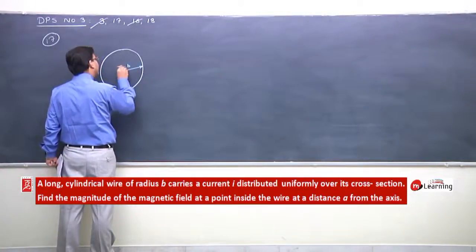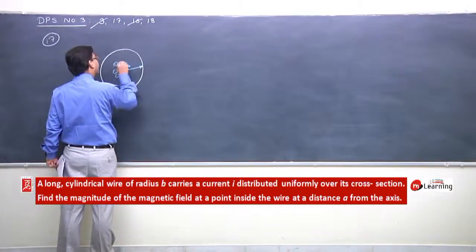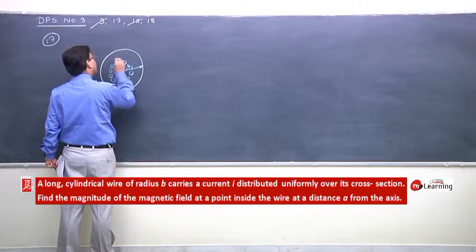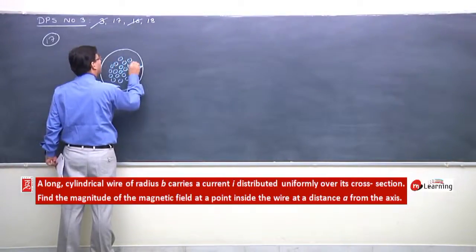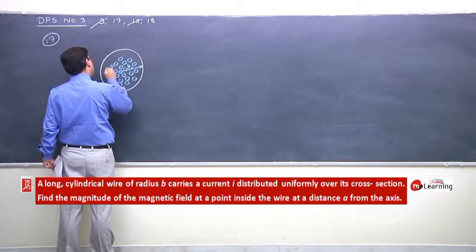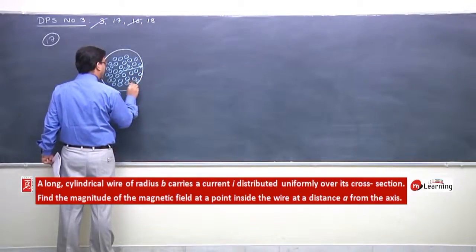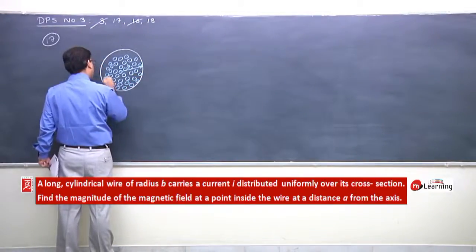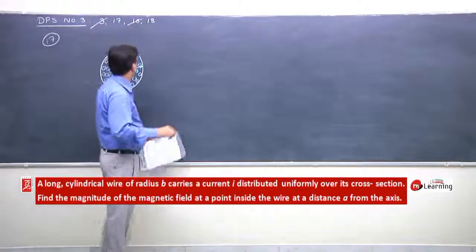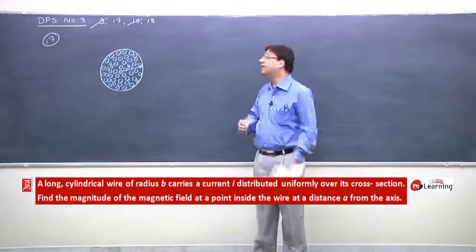This means current I is uniformly distributed across the cross-section. The current is distributed throughout the wire. Find the magnitude of magnetic field inside the wire at a distance of A from the center.